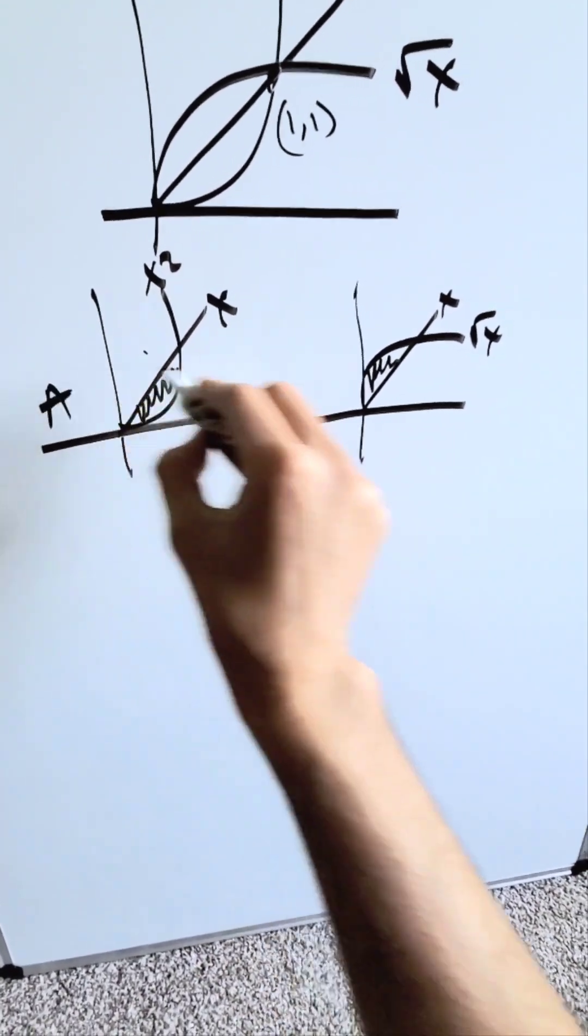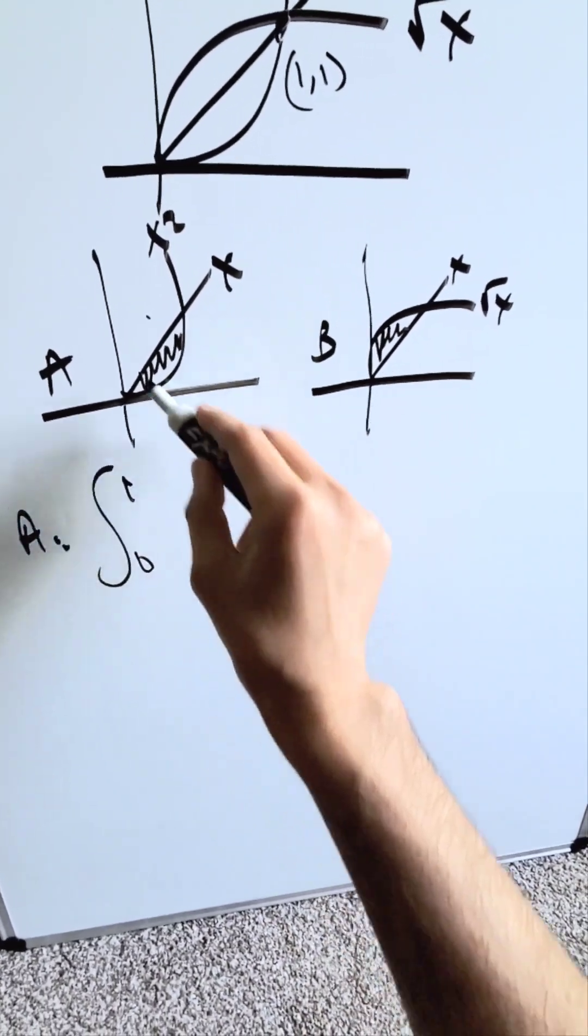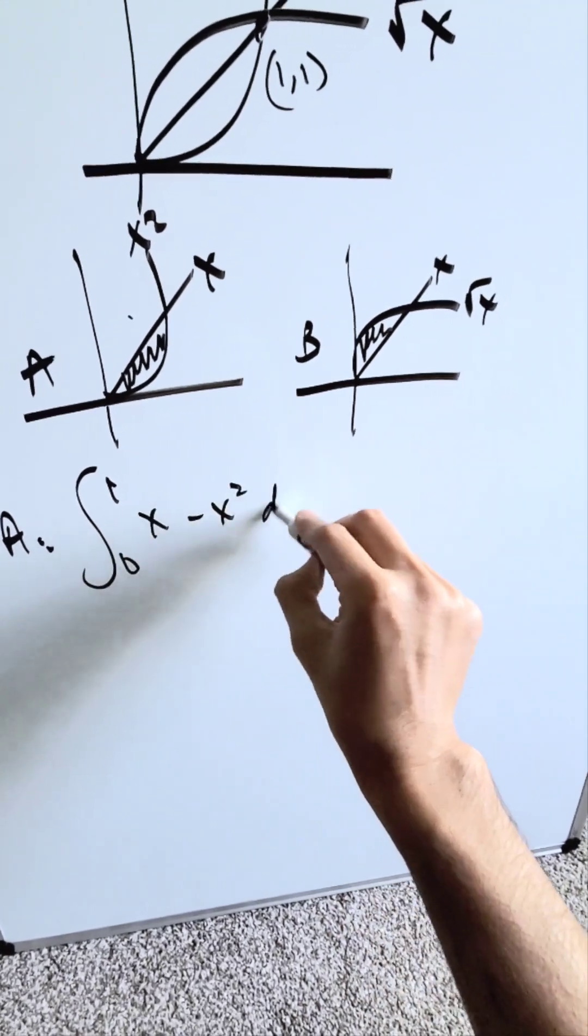This integral I'll call A, this I'll call B. The A integral, if you were to do its area, goes from 0 to 1. You have upper function x, lower function x squared dx.